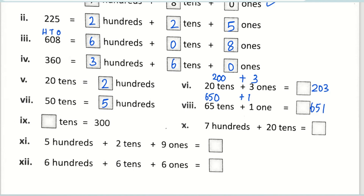The same way — how many tens gives you three hundred? Thirty tens gives you three hundred. The next one: seven hundreds plus twenty tens gives you how much? Seven hundreds plus twenty tens gives you two hundred, so the answer is nine hundred. Next: five hundreds plus two tens plus nine ones gives you five hundred twenty-nine. Six hundreds plus six tens plus six ones gives you six hundred sixty-six.